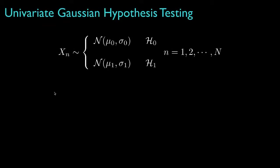For a univariate Gaussian hypothesis test, we envision N independent identically distributed samples of a Gaussian random variable where, under hypothesis 0, the mean and standard deviation are mu_0 and sigma_0, and under hypothesis 1, the mean is mu_1 and the standard deviation is sigma_1.